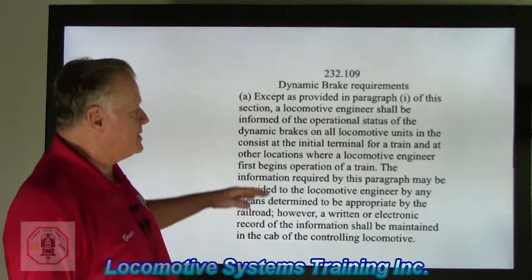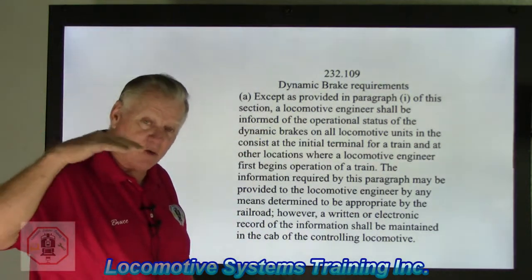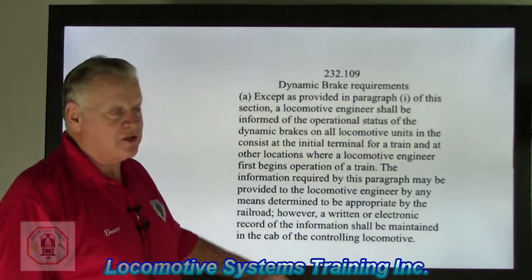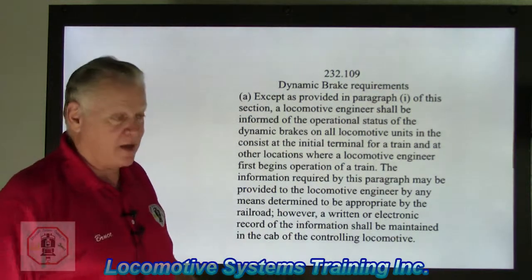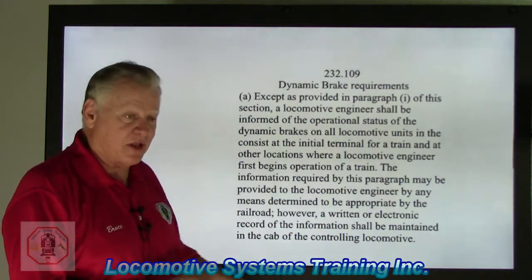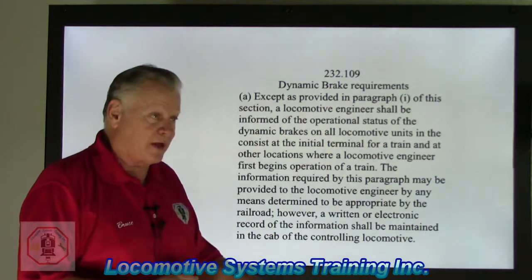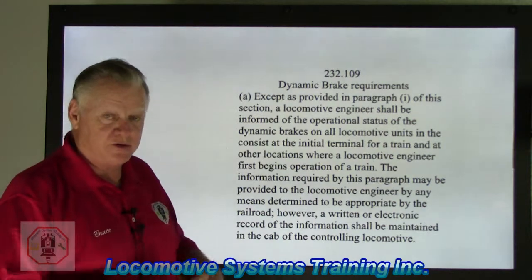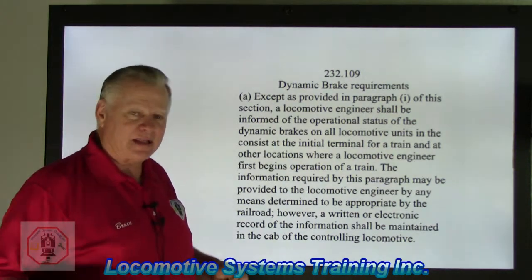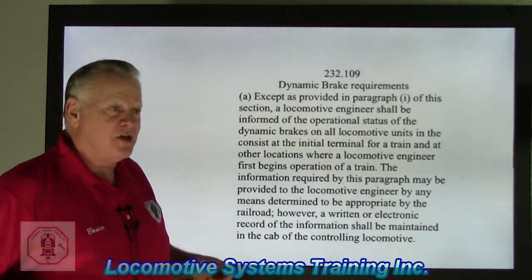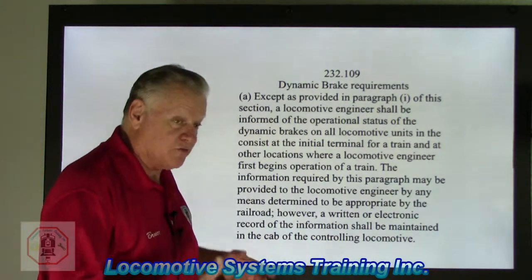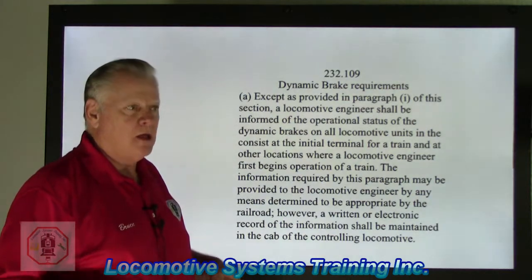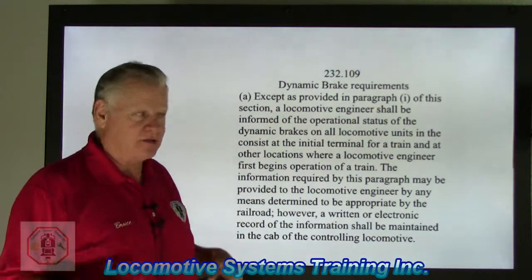The cool part about dynamic braking is that as the train is descending, the engineer can move the lever on the control stand into dynamic braking, which has zones one through eight. What that does is change the motors from being motors into generators — kind of like downshifting in your automobile, but done electrically instead of mechanically.